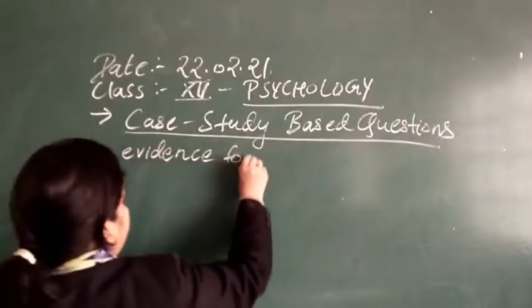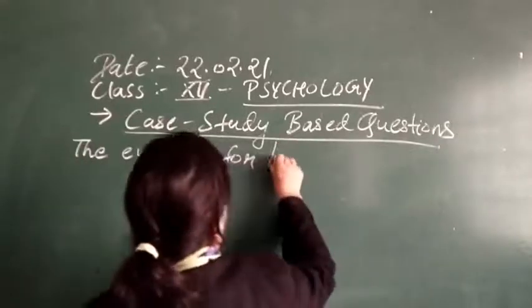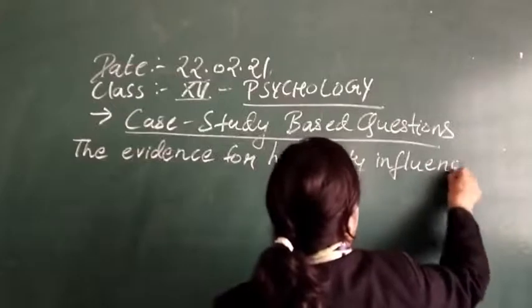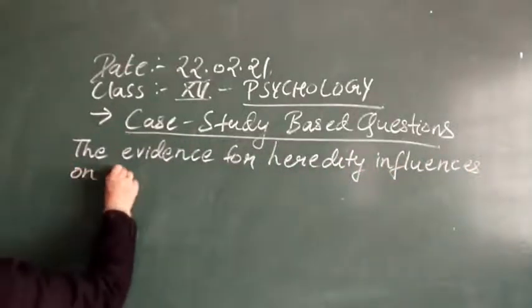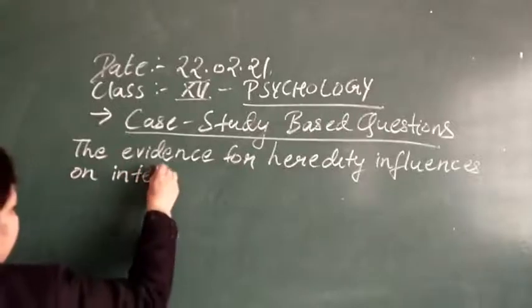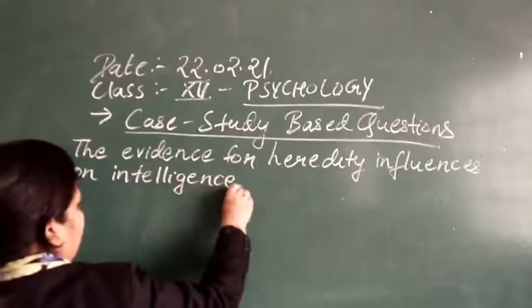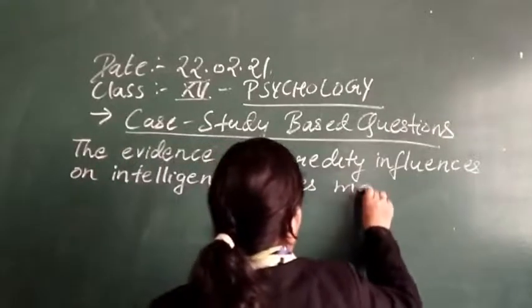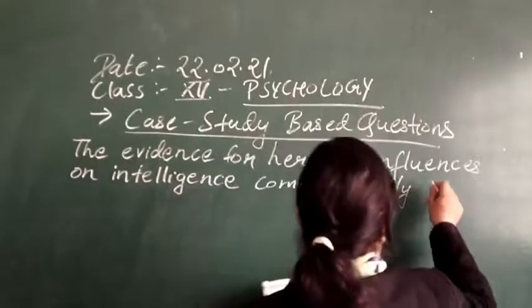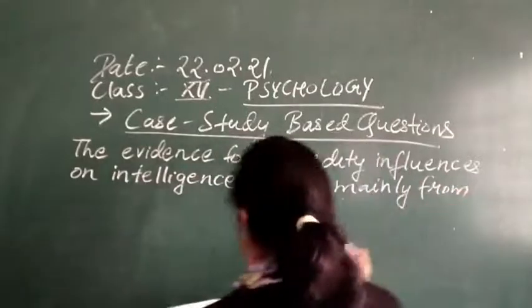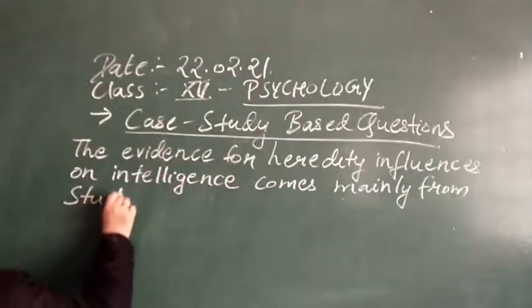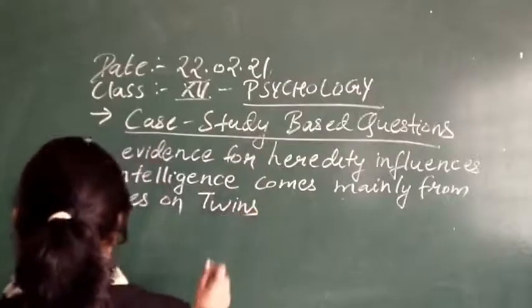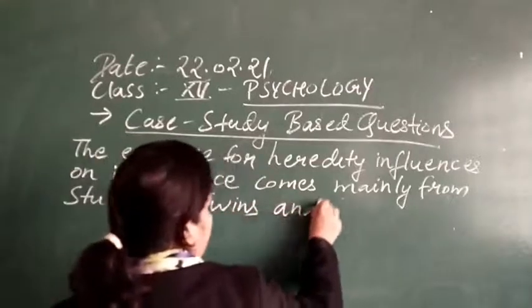The evidence for heredity influences on intelligence comes mainly from studies on twins and adopted children.